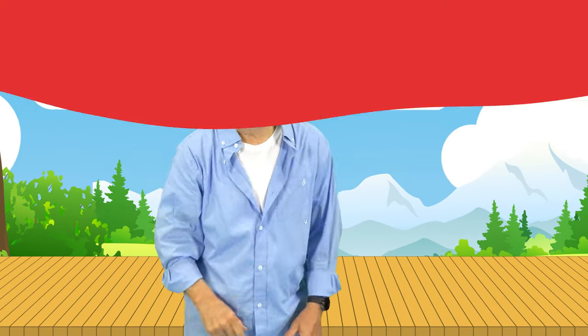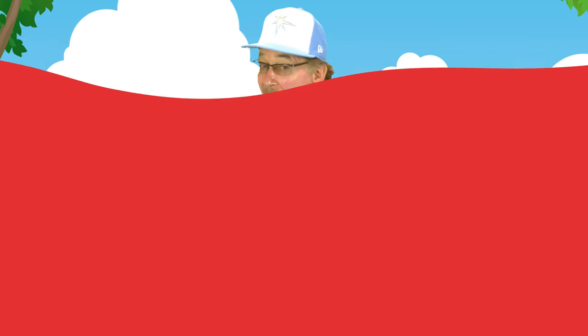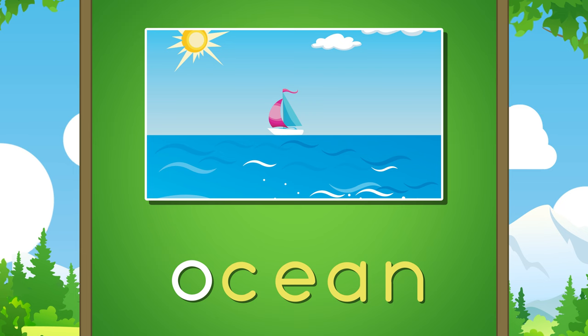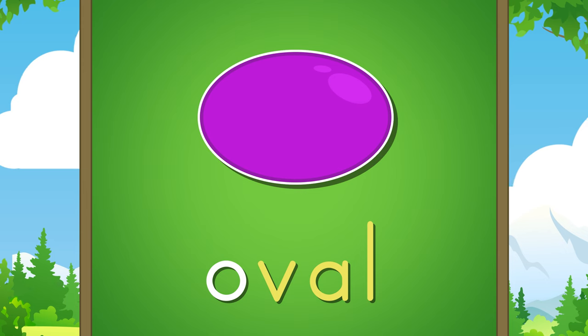Listen right now, letter O makes this sound. I say the long O sound: oh, oh, oh, oh. Now you say the long O sound: oh, oh, oh, oh. At the beginning of these words, listen for the long O sound: ocean, oatmeal, oval.